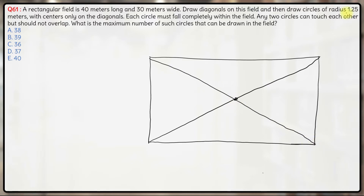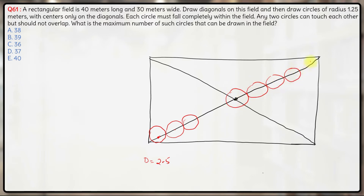Draw circles of radius 1.25 meters with centers only on the diagonals. Each circle must fall completely within the field, and any two circles can touch each other but not overlap. For example, one circle will be drawn here with its center on the diagonal and radius 1.25, so the diameter will be 2.5. Circles continue along the diagonal, with one at the center as well, until a circle exactly touches the two sides of the rectangle.